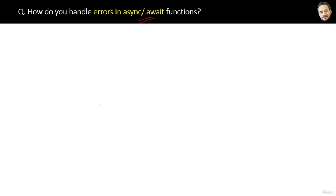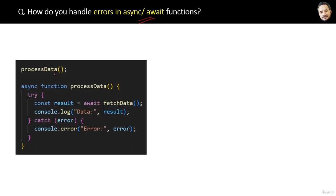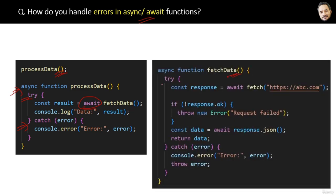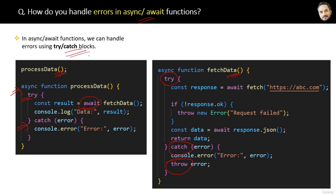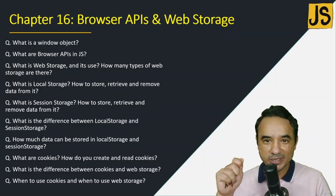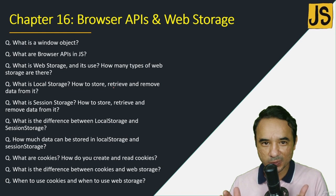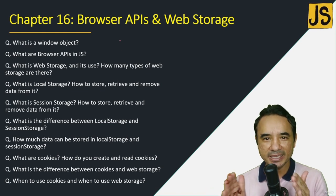How do you handle errors in async/await functions? You already know the answer. Here the function processData uses async/await and inside it there is a try/catch block. The fetchData function also uses try, catch, and throw statements. The answer is: in async/await functions we handle errors using try/catch blocks. Congratulations on completing the asynchronous programming section — that was a milestone.